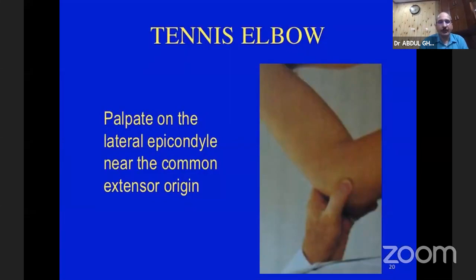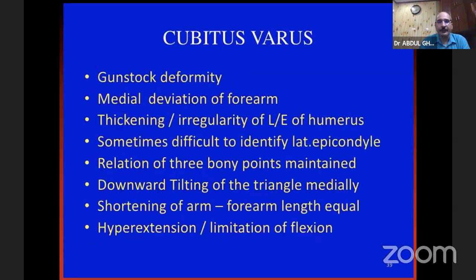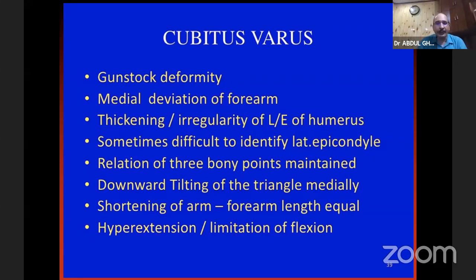Tennis elbow: classical tenderness at the lateral epicondyle at the common extensor origin. Pulled elbow: occurs in 2 to 5-year age group, history of lifting the child by the forearm with extended elbow, child screams continuously and will not allow examination, happens due to subluxation of the radial head out of the annular ligament, no obvious swelling or deformity, x-ray essentially normal, treatment is reduction and there will be instantaneous relief. Cubitus varus: gunstock deformity, medial deviation of forearm, decreased or reversed carrying angle, thickening and irregularity of lower end of humerus. Three-point bony relationship is maintained.